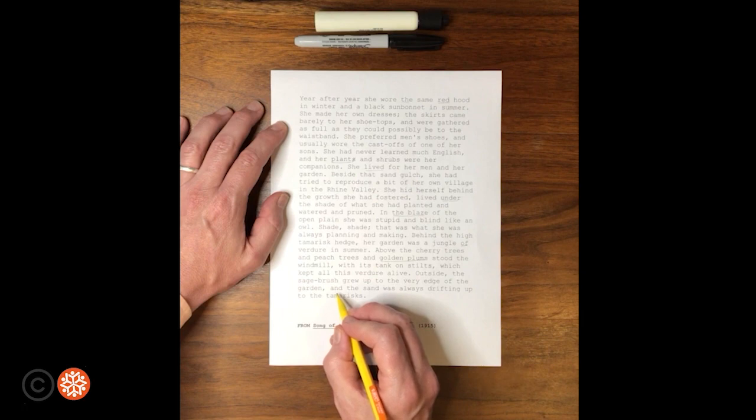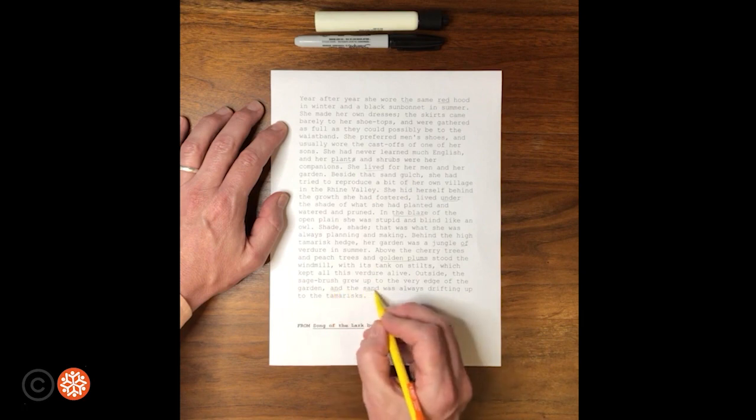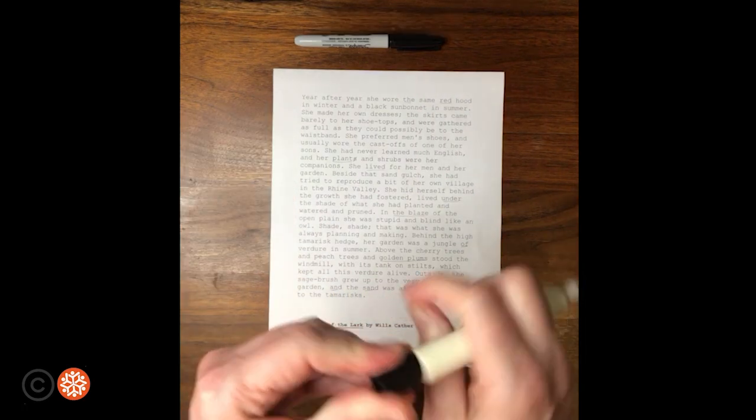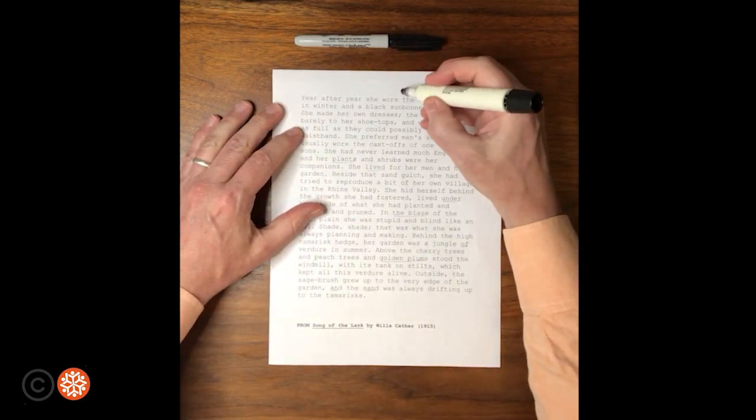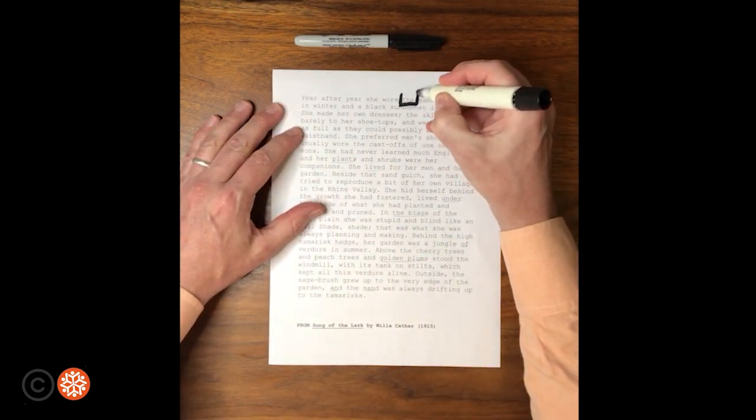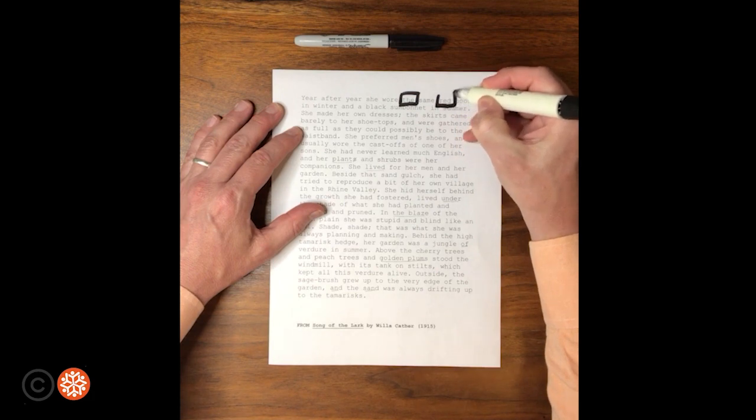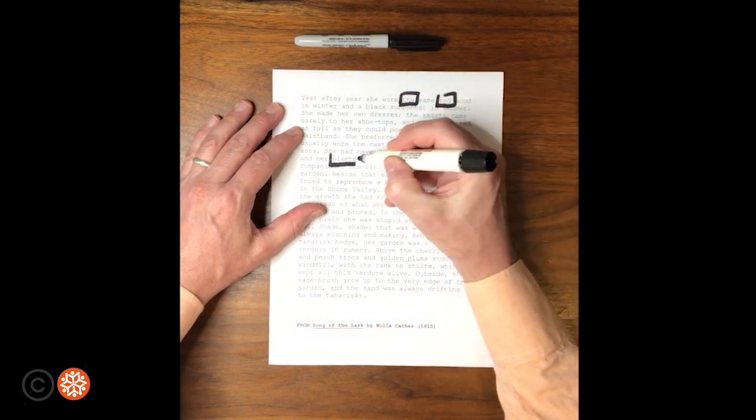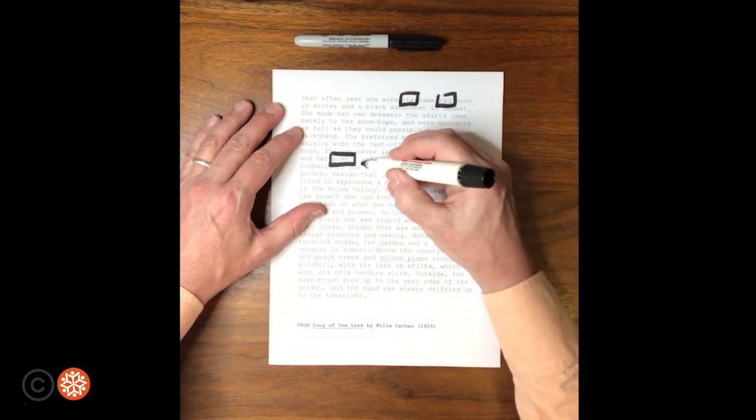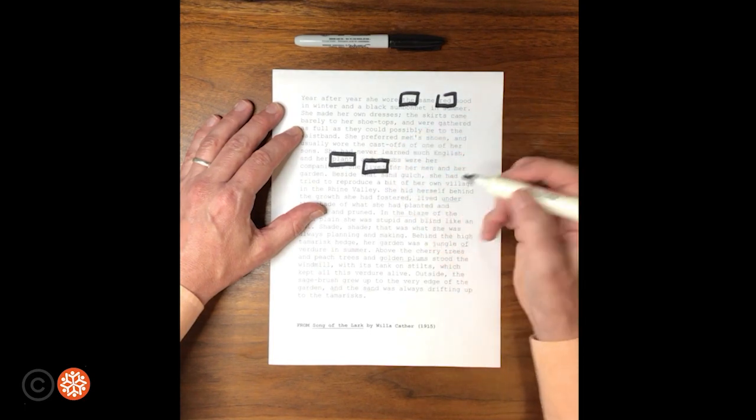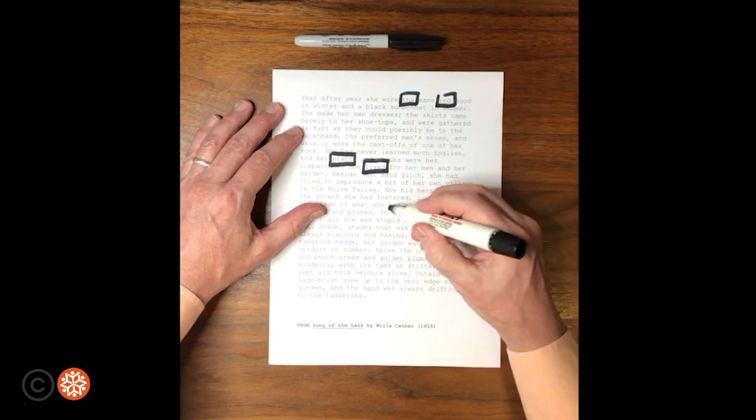Once I've made my choices and I'm happy with my choices, I'm going to outline the words with the marker that I want to remain visible. These passages are from a book titled Song of the Lark by the great American author Willa Cather.